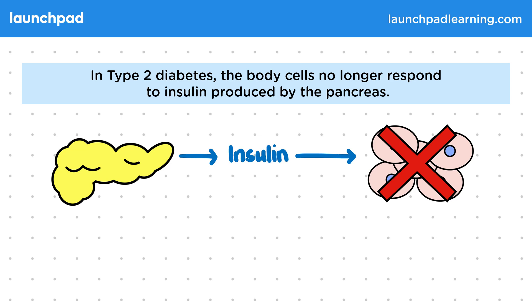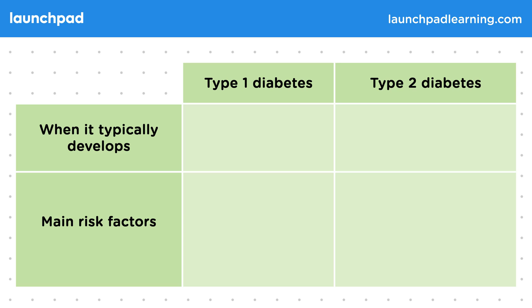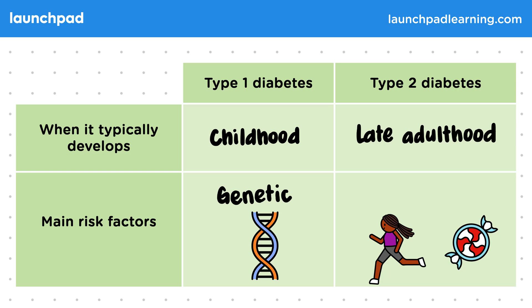We're going to summarize some of the important differences between these two types of diabetes in this table. Type 1 diabetes typically develops in childhood, and type 2 in late adulthood, although there will be exceptions. The main risk factors for type 1 diabetes are genetic, and for type 2 diabetes it's lifestyle. While these are the main risk factors for each, both genetics and lifestyle will affect both types.